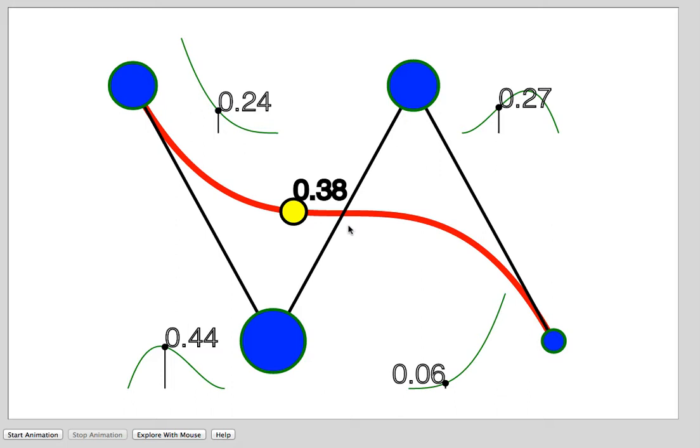But in this screencast, we're going to take a little different approach. A cubic Bezier curve is determined by the locations of the four blue control points.